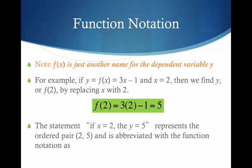And so I get this statement that if x equals 2, then y equals 5. This is the ordered pair: 2 in the x spot, 5 in the y spot. And we can abbreviate with function notation f of 2 equals 5.